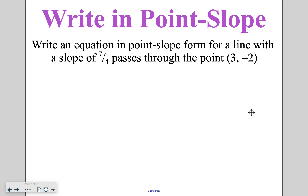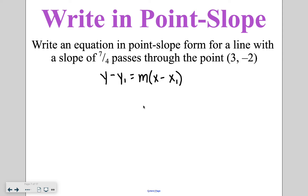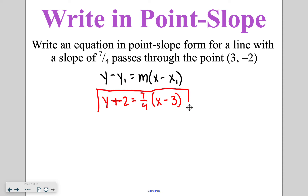When writing values in point slope form, the general format is y minus y1 is equal to m times x minus x1. If they give you a slope and a point, all you have to do is plug your values in. So I write y minus negative 2 is equal to 7 fourths times x minus 3. Simplifying the double negative to a positive, my equation is y plus 2 is equal to 7 fourths times x minus 3.